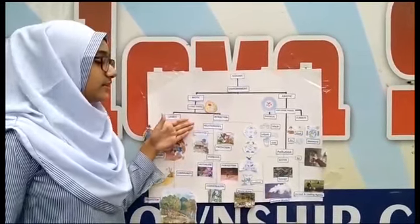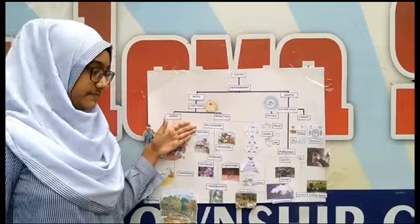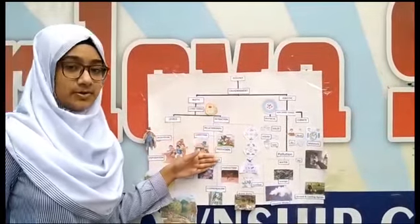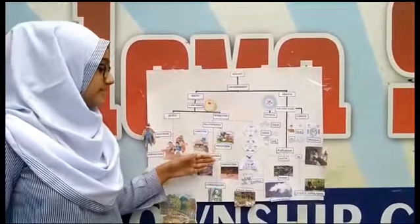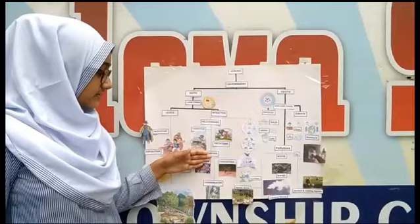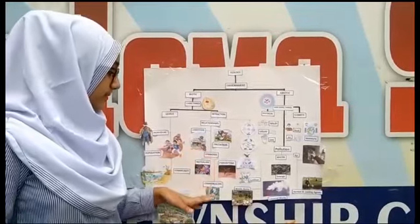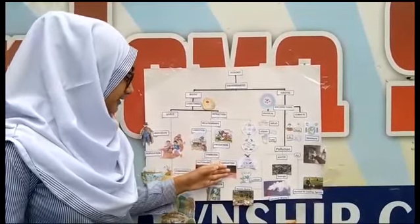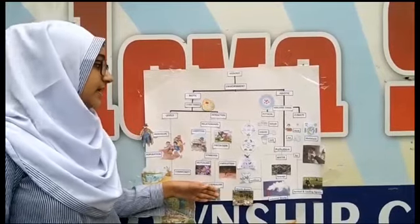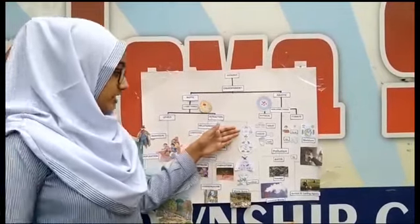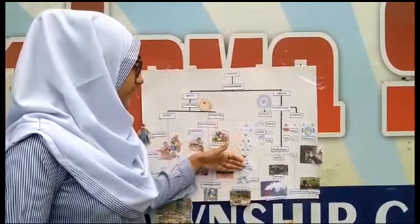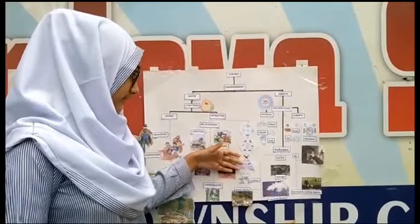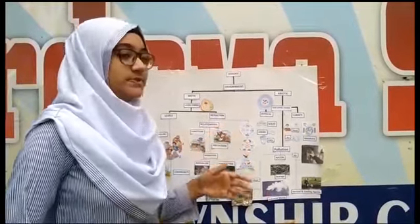In relationships there are three types: competition, predation, and symbiosis. Symbiosis is further divided into three parts: mutualism, parasitism, and commensalism. Food chain, food web, and energy pyramid are also included in relationships.